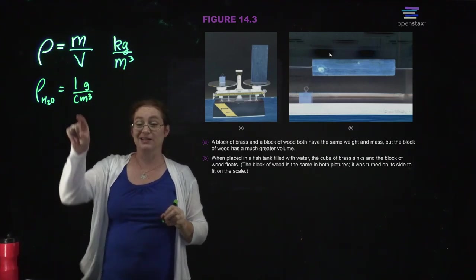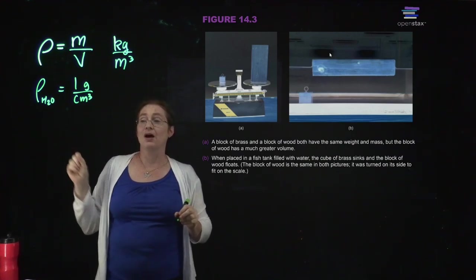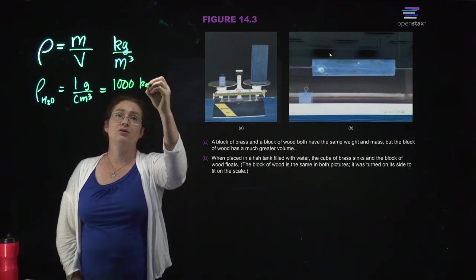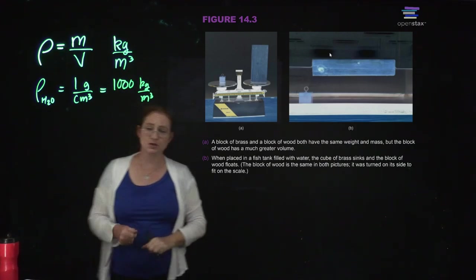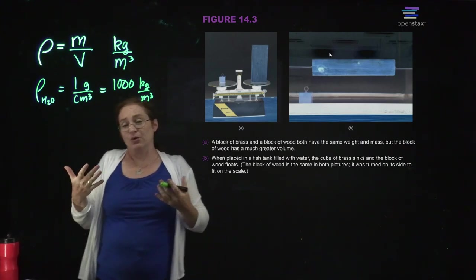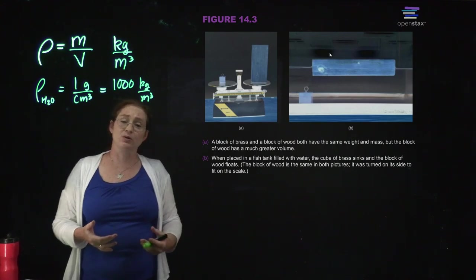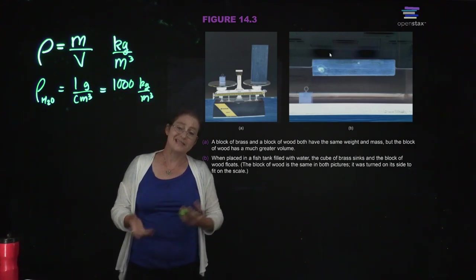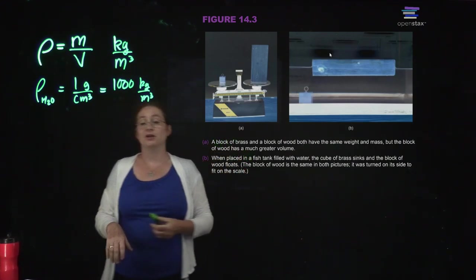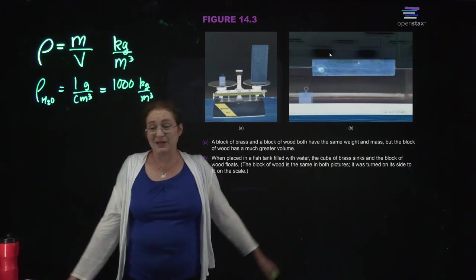That's not SI units — the SI version is 1000 kilograms per meter cubed. We often want to know the density of something relative to water. Water is a very dense liquid; most liquids are less dense than water. People are approximately all water, so if you want to estimate the density of a person, water is not a bad place to start.